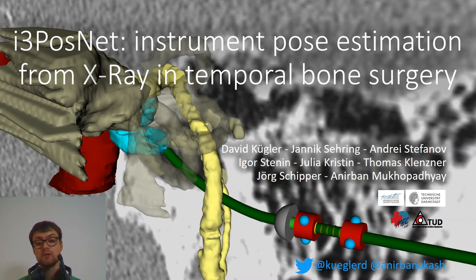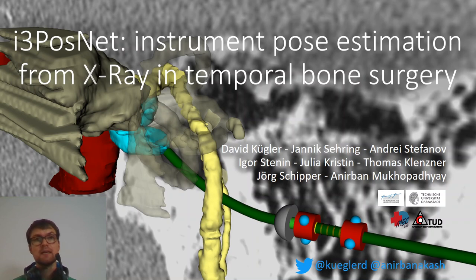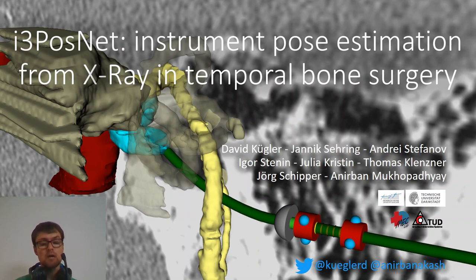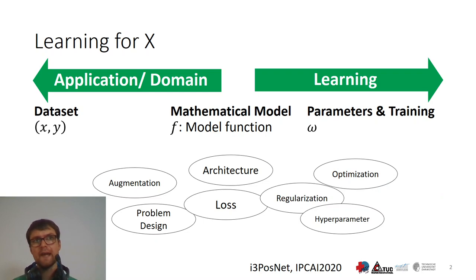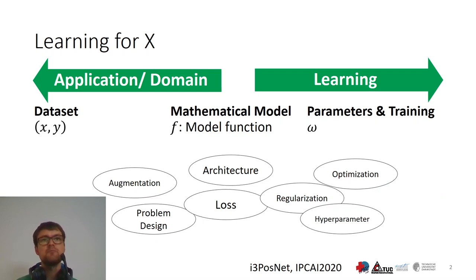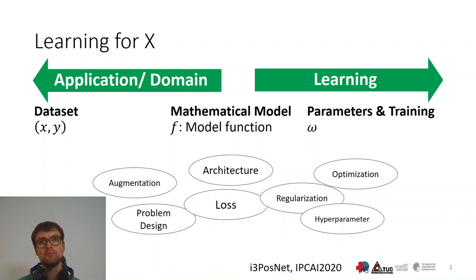Methodologically, we focus on translation of AI aspects. In fact, my PhD thesis is about making CAI AI-ready, so this is only befitting. I want to start with the learning perspective on a problem. Learning for X can be described as built on three pillars: the dataset, the mathematical model, and parameters and training process.